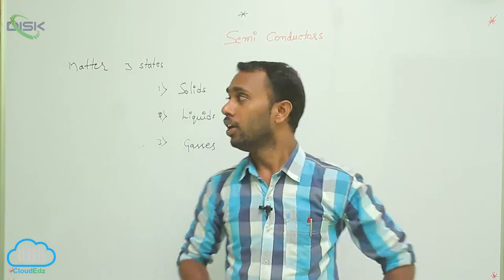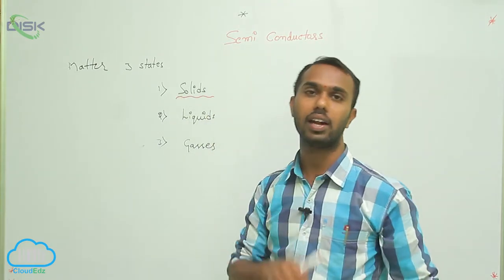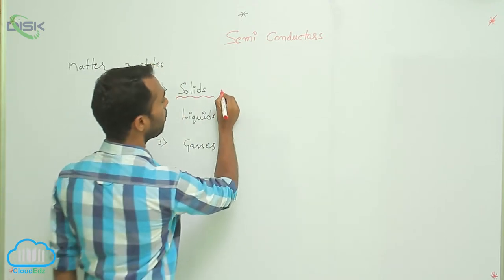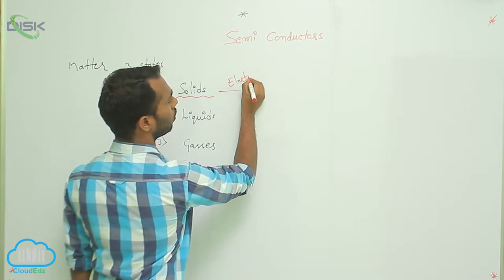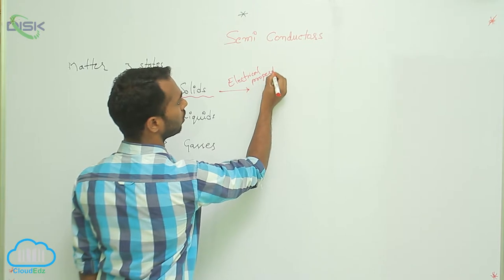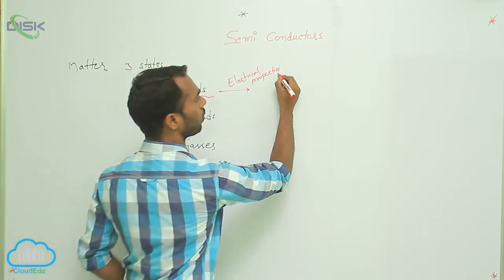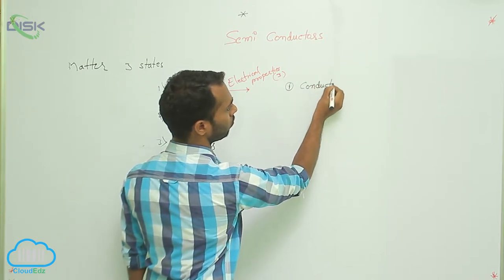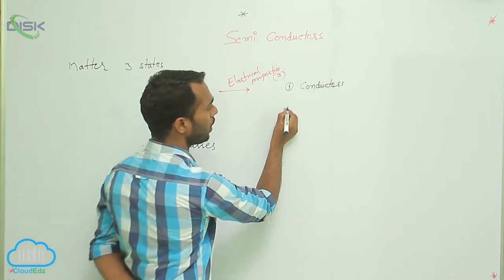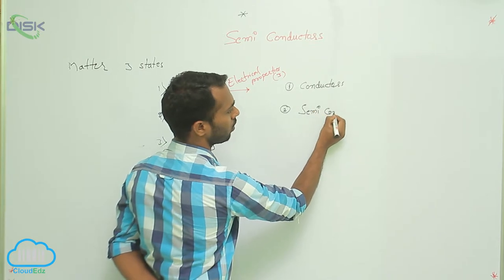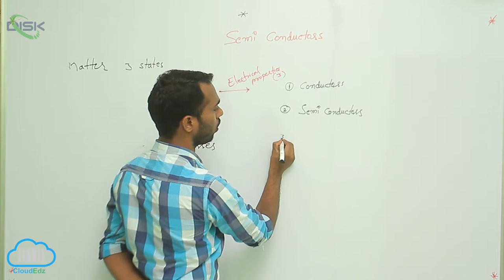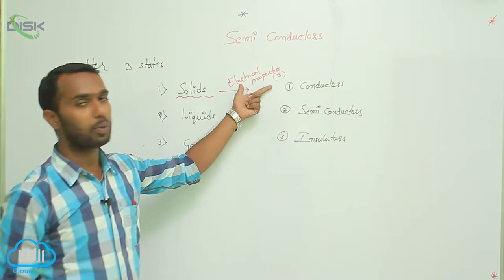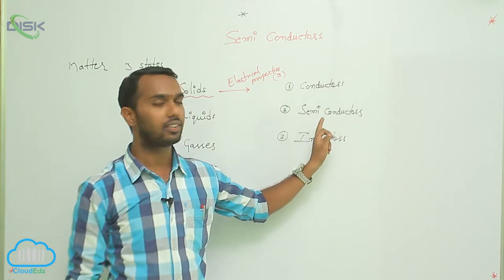If you go for solids, based on electrical properties, solids are again classified into three types. What are they? Number one: conductors. Next one: semiconductors. And last one: insulators. Based on electrical properties, solids are classified into conductors, semiconductors, and insulators.